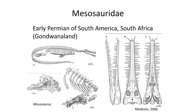The first parareptile group are the Mesosauridae, a group known from the early Permian of South America and South Africa, or Gondwanaland. These nearshore aquatic reptiles are often cited in introductory geology textbooks as evidence for plate tectonics and the formation of Gondwanaland, since their fossil record is confined to South America and South Africa.